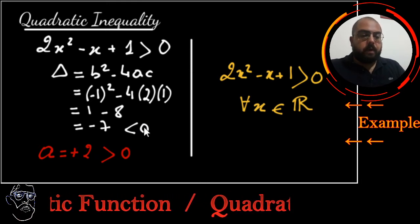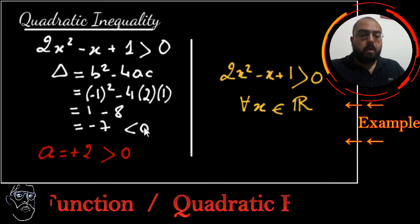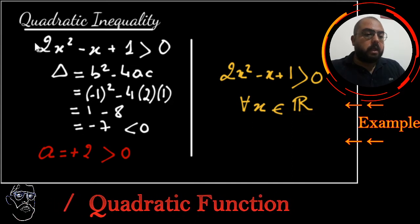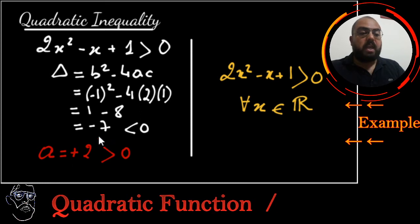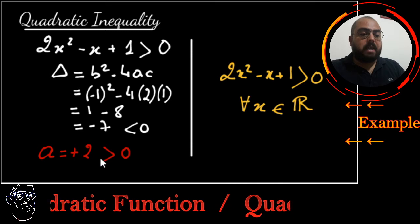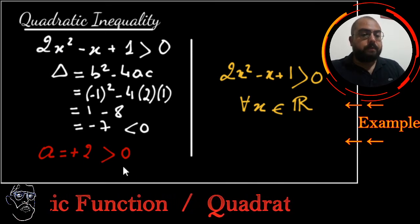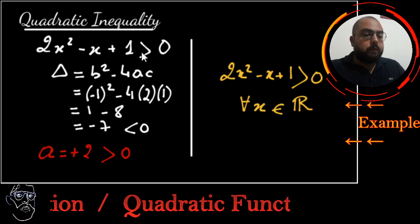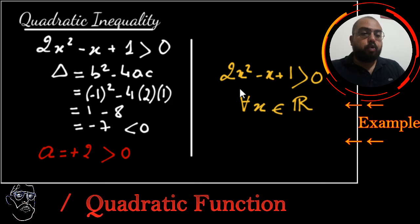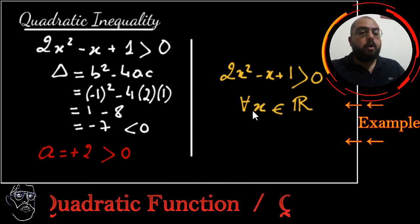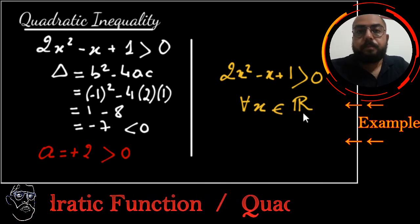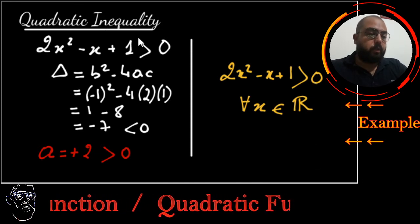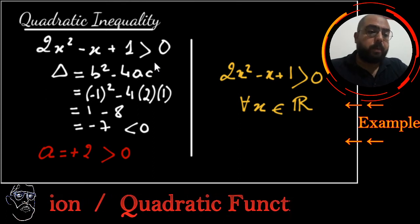What does it mean when delta is negative? Very simple: no real roots. When you don't have any real roots, you cannot factorize. Since I cannot factorize this polynomial, I will have to check the sign of a. The function will take the same sign as a. a is +2, it is positive. That's why this function will be positive for any value of x. So 2x² - x + 1 is strictly positive for any value of x belonging to the real numbers.